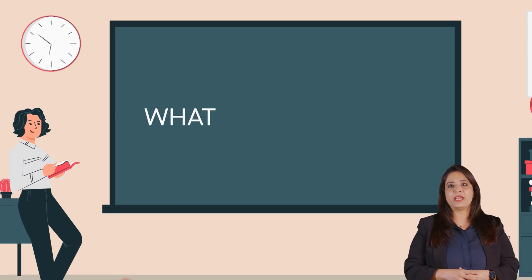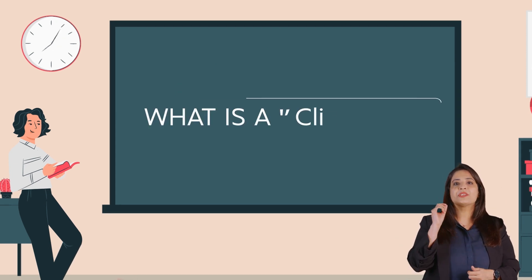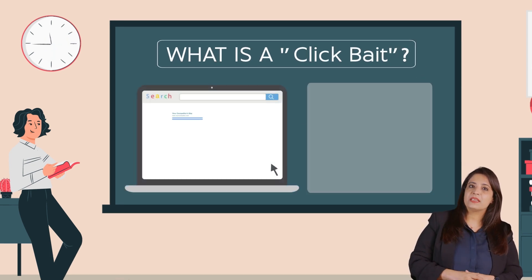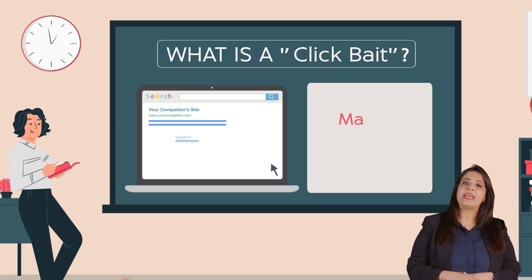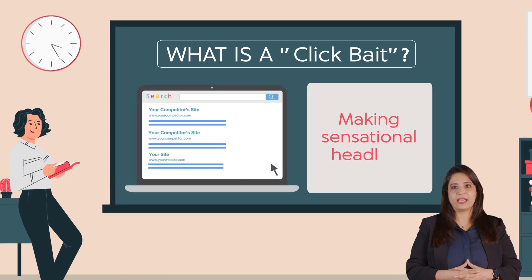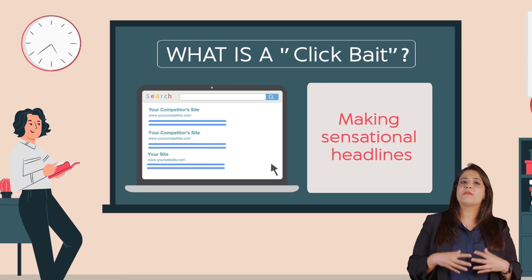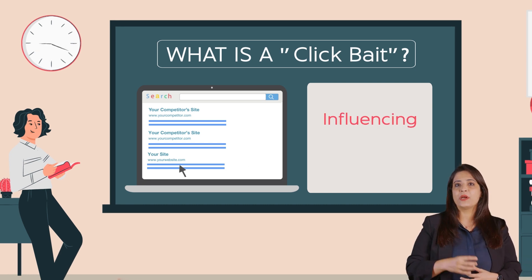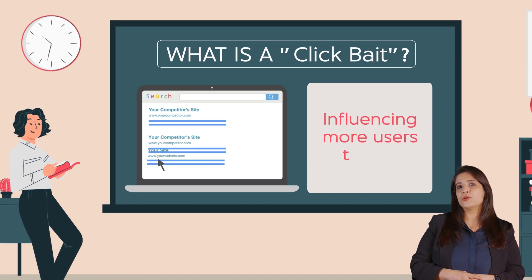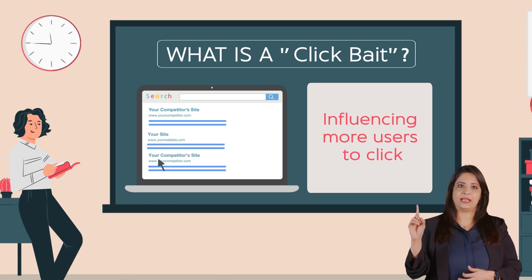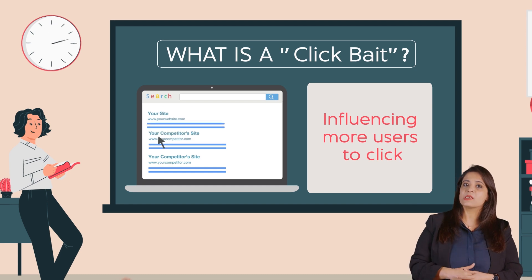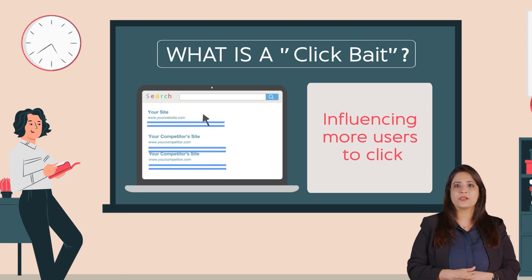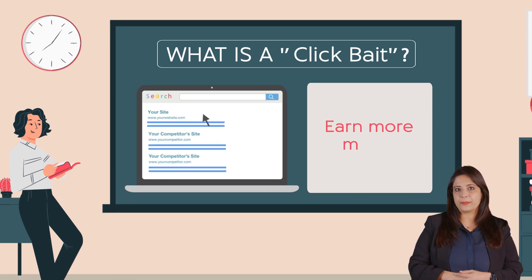Let me explain what clickbait means. Clickbait is about making sensational headlines that are misleading in nature and influencing more users to click. This practice is performed by advertisers to earn more money.